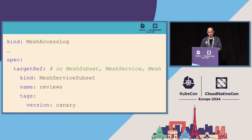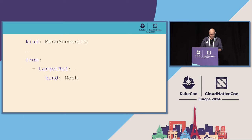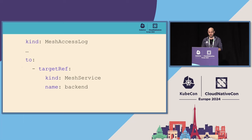In this example, we have mesh access log, and a target ref policy consists of a couple of levels. The first one is the top-level target ref, which defines which proxies this configuration is going to be modified. The proxies related to the reviews service with a tag version equal to canary are going to be modified. In the from section, we define all the incoming traffic that is going to be logged — in this case, everything coming from within the mesh. And in the to section, we define what outgoing traffic is going to be logged — in this case, everything going to a service called backend.